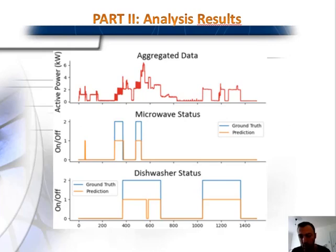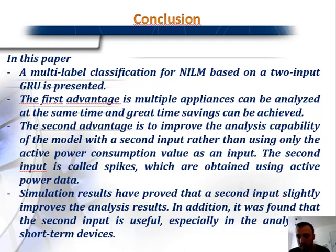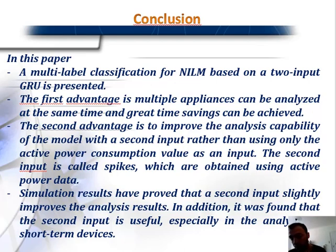In conclusion, a multi-label classification for NILM based on a two-input GRU is presented. The first advantage is that multiple appliances can be analyzed at the same time, achieving great time savings. The second advantage is improved analysis capability using a second input — spikes — derived from active power data, rather than using only active power. Simulation results proved that the second input slightly improves overall results and is especially useful for the analysis of short-term operating devices. Thank you for your attention.